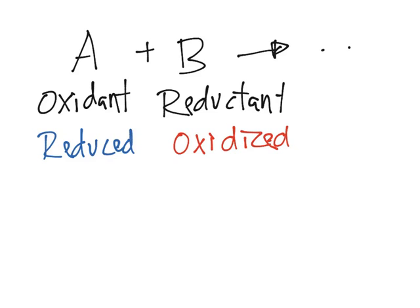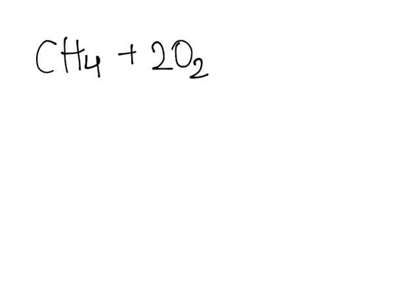Now let's solve a problem where we have to identify the oxidant, the reductant, and which species gets oxidized and which gets reduced. We have CH4 plus 2O2 forming 2H2O plus CO2. If you remember, this is a combustion reaction. There's oxygen as a reactant and water and carbon dioxide as products, and we have CH4 as the fuel. We want to first find which species gets oxidized and which gets reduced.